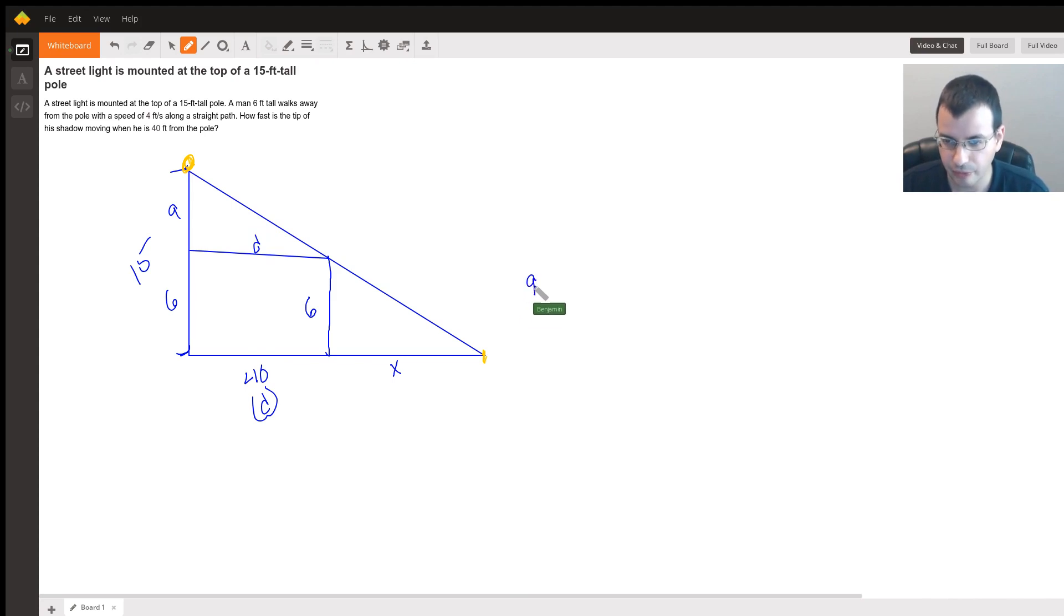So this is 9 over d equals 15 over d plus x. And then cross multiplying we get 9d plus 9x equals 15d. So 9x equals 6d, x equals 2/3 d, and I just simplified the 6 over 9.